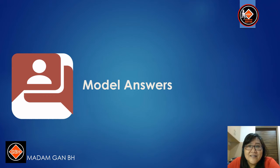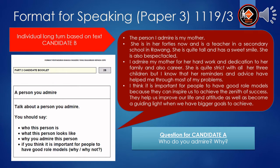Let's look at the model answer. The person I admire is my mother. She is in her 40s and is a teacher in a secondary school in Rawang. She is quite tall and has a sweet smile. She is also bespectacled. I admire my mother for her hard work and dedication to her family and career. She is quite strict with all her three children but her reminders and advice have helped me through most of my problems. I think it is important for people to have good role models because they can inspire us to achieve the zenith of success. They help us improve our life and attitude and become a guiding light when we have bigger goals to achieve.